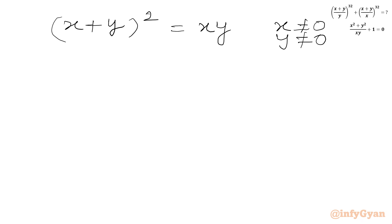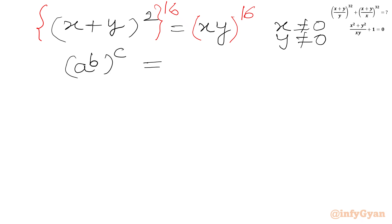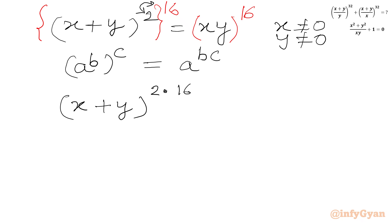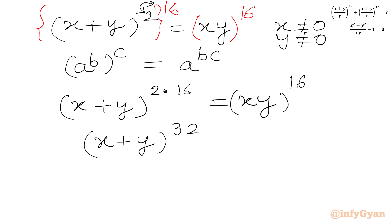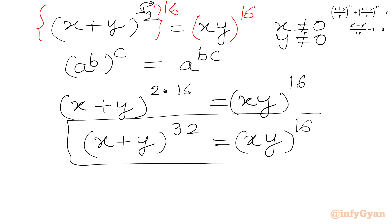Now I will raise both sides to the power 16. Using the exponent law (a^b)^c = a^(b×c), the left side becomes (x + y)^(2×16) = (x + y)^32, and the right side becomes (xy)^16. So we have (x + y)^32 = (xy)^16. Let's call this equation 1.